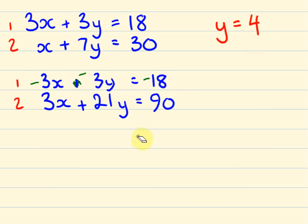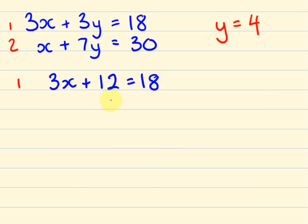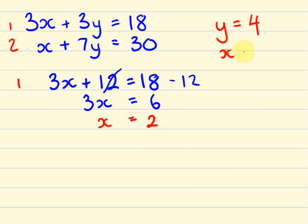Let's rub those out and now substitute these values into one of the equations. I'm going to put it into equation 1. For equation 1, substituting in the values: 3x stays the same, plus 3y — 3 times 4 is 12 — and it equals 18. We can get rid of this 12 by taking it away from both sides, so we end up with 3x equals 6. Therefore x equals 2. So y equals 4 and x equals 2.